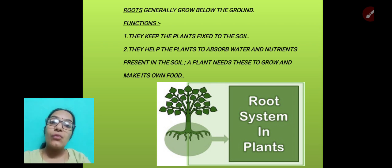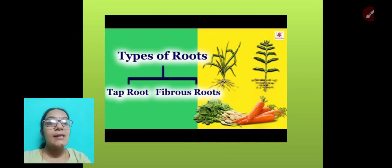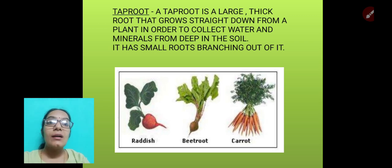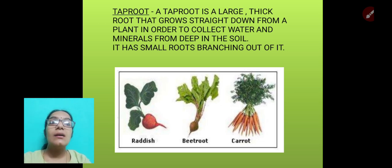Food is made by the process of photosynthesis using air, water, and sunlight. Now there are two types of roots: taproot and fibrous roots. A taproot is a large, thick root that grows straight down from a plant in order to collect water and minerals from deep in the soil.